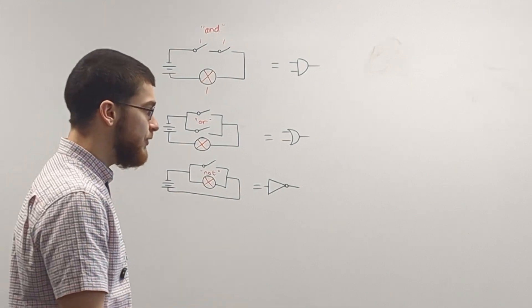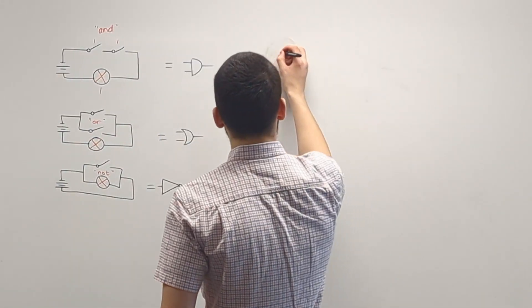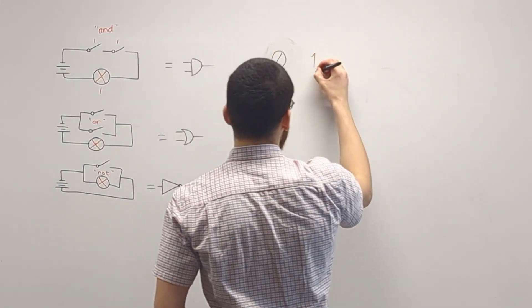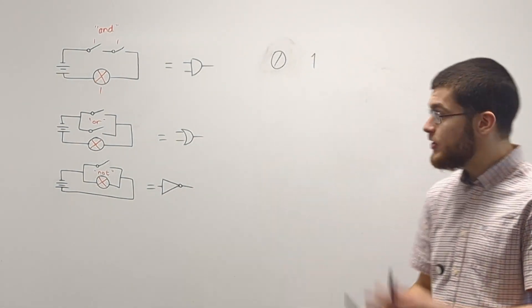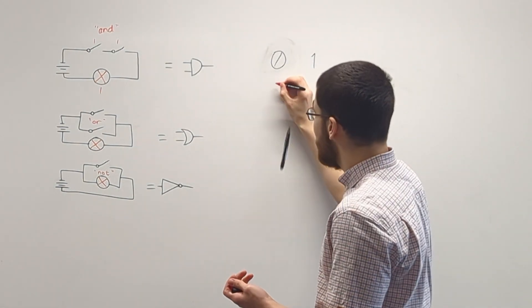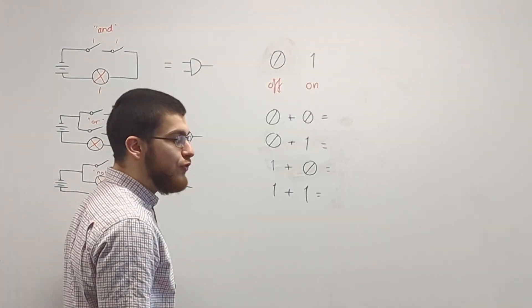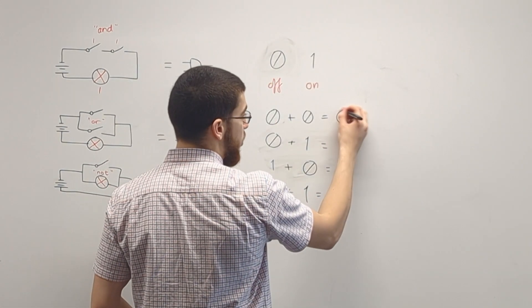For example, if you want to add two numbers together, you can use the binary counting system, which only uses a 0 and a 1, which is useful because switches can only be in two states, on or off.